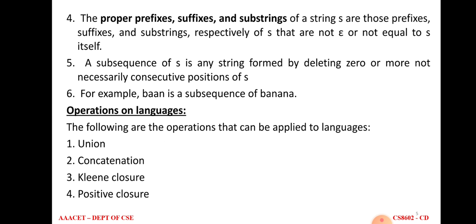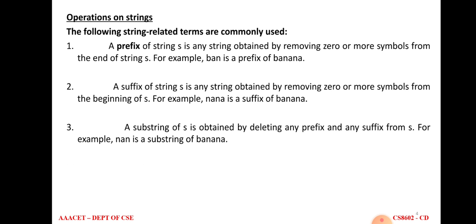A subsequence is any string formed by deleting zero or more symbols — not necessarily in consecutive positions. For example, from 'banana', by removing the third position 'n' and the last position 'a', we can get 'baan' as a subsequence. Note that subsequence differs from substring because the deleted positions need not be consecutive.